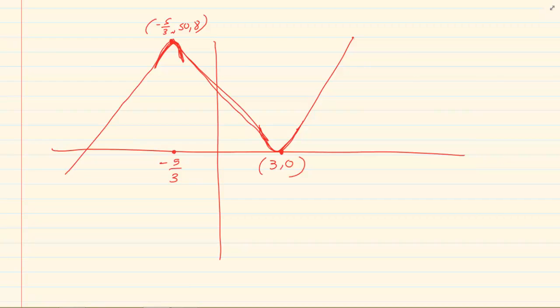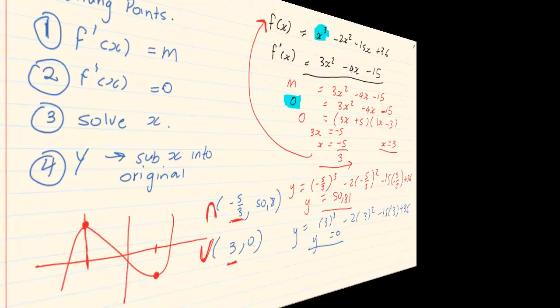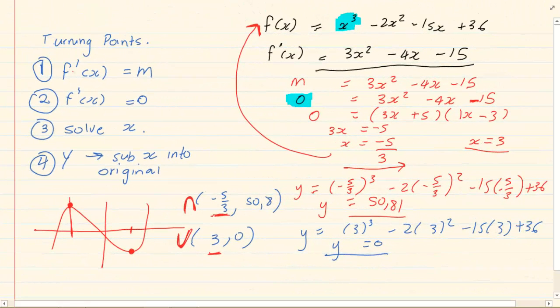So when you start, we need to know how to draw your turning points before you can draw anything. Turning points means: you are going to do the derivative, then make it equal to 0, solve for x, substitute to get y, and at all times remember whether it's a positive happy graph or a sad graph.